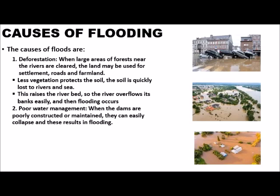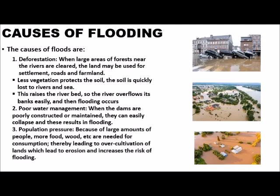2. Poor water management: when dams are poorly constructed or maintained, they can easily collapse, resulting in flooding. 3. Population pressure: because of large population, more food, wood, and so on are needed for consumption, thereby leading to over-cultivation of lands, which can lead to erosion and increases the risk of flooding.